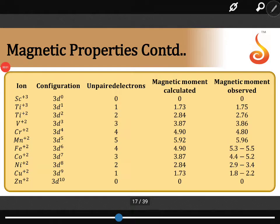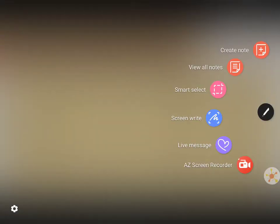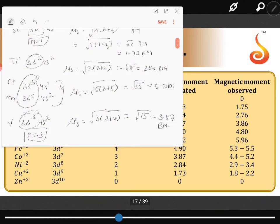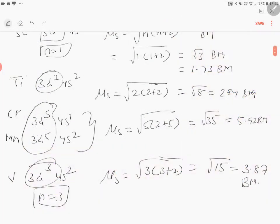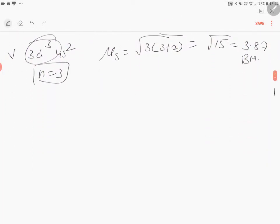Next, calculating the magnetic moment of transition metals from iron to zinc. It's very important. Iron is 3d6 4s2, so 3d6 means you will have four unpaired electrons.